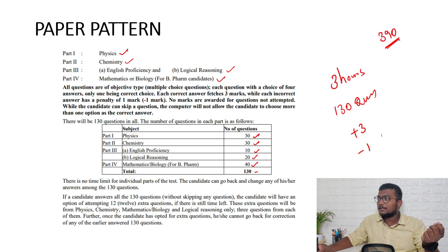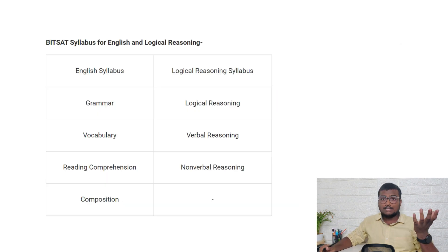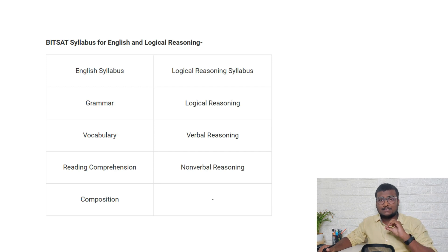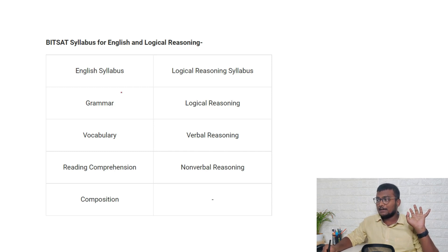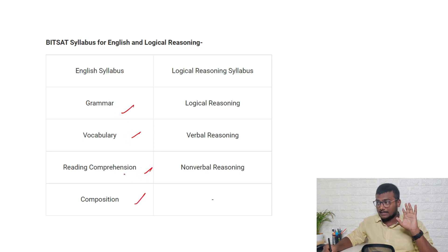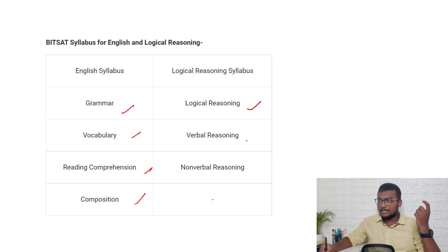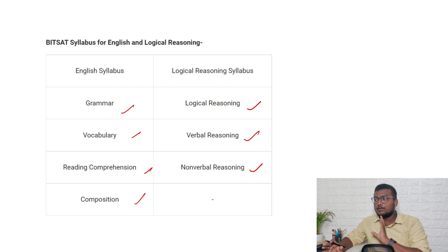You may ask what the syllabus is for English Proficiency and Logical Reasoning. For Maths, Physics, and Chemistry the syllabus will be almost the same as JEE Mains — no extra chapters. For English, the syllabus includes grammar, vocabulary, reading comprehension, and composition. For Logical Reasoning, it includes verbal reasoning and non-verbal reasoning — all these things are included in the Logical Reasoning syllabus.